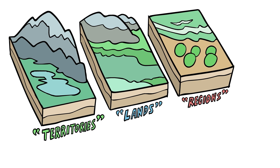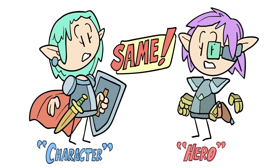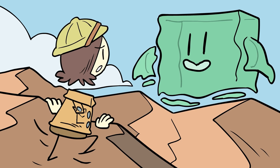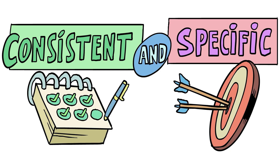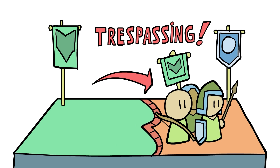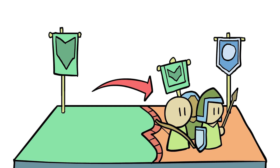From there, you'll want to make sure your language is consistent and specific. Initially, our doc referenced territories, lands, and regions when they were all, in fact, the same thing. We also used character and hero interchangeably. Don't do this. These are the mirages that can lead you astray. Be specific wherever you can, and make sure that your terms are defined. If you write, "heroes entering another faction's territory without a declaration of war are trespassing," then you better define what trespassing is somewhere else.